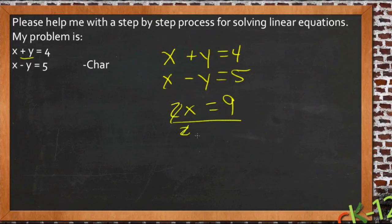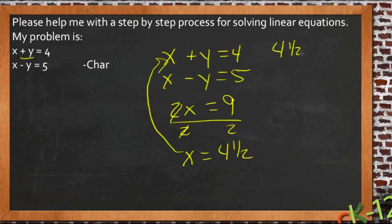Divide both sides by 2. 9 divided by 2 is 4 and a half. So x is 4 and a half. Then I can just plug that back into one of my equations up here, and I'll get 4 and a half plus y equals 4.